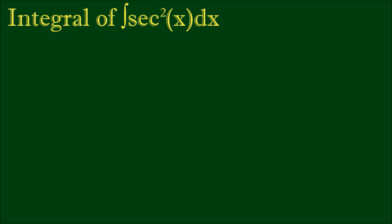The integral of secant squared of x should be easy and straightforward. Early in high school calculus, we learn the derivatives of the three primary trigonometric functions — sin, cos, and tan — and specifically that the derivative of tan is equal to secant squared. Since integration is simply the reverse of differentiation, the integral of secant squared is simply equal to tan x plus an integration constant.